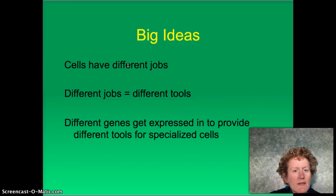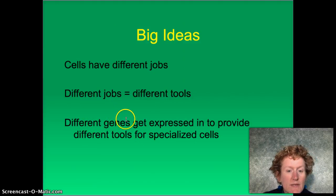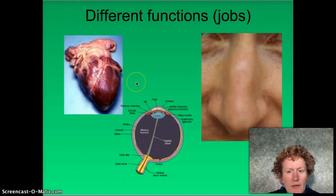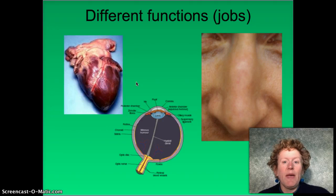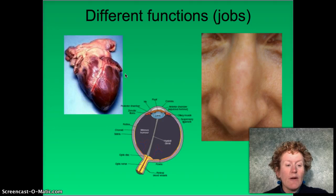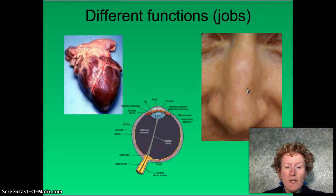The big idea is there are cells that have different jobs, and different jobs need different tools. So even though all your cells have the same DNA, different genes — different parts of the DNA — get expressed to provide different tools for the different specialized cells. Cells are going to look very different depending on what their function is, going back to that structure-function idea we've been talking about in biology.